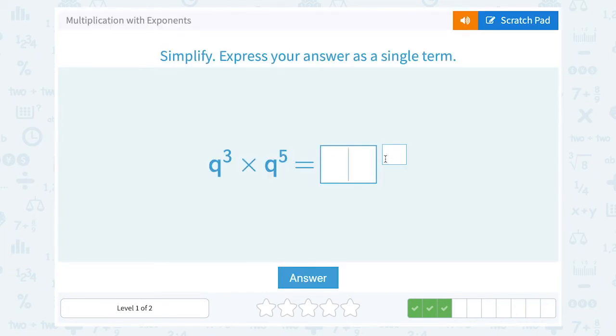q to the 3rd times q to the 5th. Well again, when you're multiplying with the same base, you can add your exponents. So the base is still q, and then we'd add those exponents. 3 plus 5 gives us the 8th power.